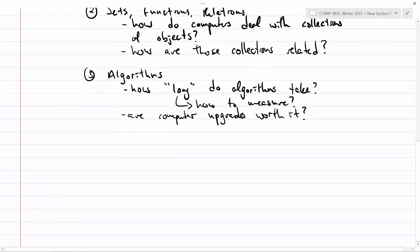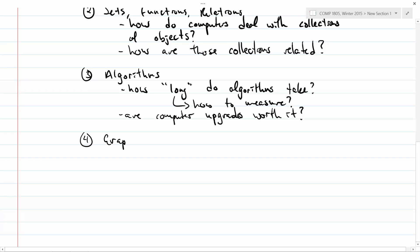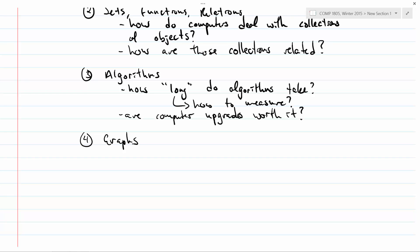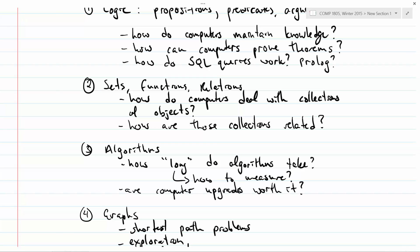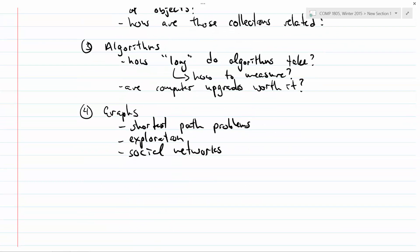The very last broad topic we'll talk about in this course is graphs. Graphs are a very useful tool you'll see throughout the rest of your computer science careers. It's a very nice way of modeling problems, and lots of research is done into graphs. So if you can set your problem up as a graph, someone has probably already come up with a solution to it. Graphs involve things like shortest path problems, exploration, and social networks.